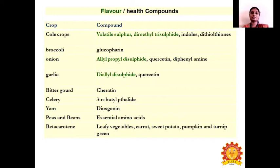Regarding flavor and health compounds in vegetable crops: in cole crops, the compounds present are volatile sulfur, dimethyl trisulfide, indoles, and dithiolanes. The flavor in broccoli is due to glucosinolates. The pungency in onion is mainly due to allyl propyl disulfide, and it also contains glucosinolates and dithiolamide. The pungency in garlic is mainly due to diallyl disulfide and the presence of quercetin. The bitterness in bitter gourd is due to charantin. The flavor in celery is mainly due to 3-n-butyl phthalide. Yam contains diosgenin, and peas contain essential amino acids. Beta-carotene is present in leafy vegetables, carrots, sweet potato, and pumpkin.